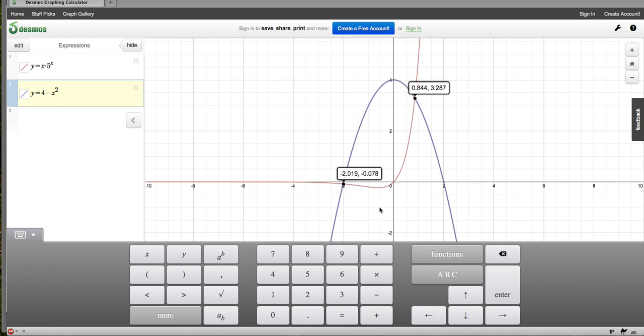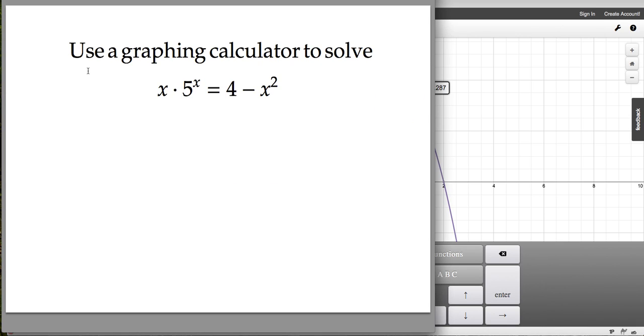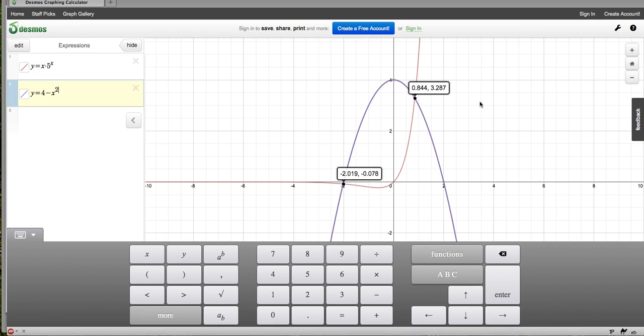So those are the coordinates of my intersection points. Now, what I want is the value of x that makes this equation true. So what I want from the graph is the x-coordinates of my intersection points. So my solutions are going to be negative 2.019—now that's an approximation, they just round it to three decimal places—and the other solution is going to be 0.844.